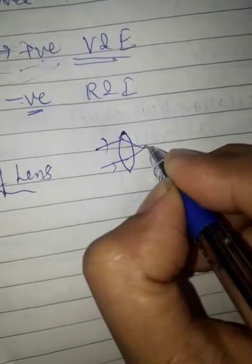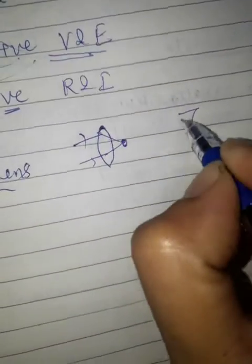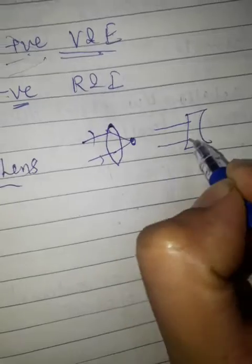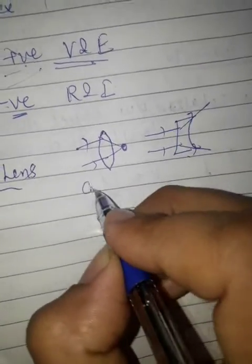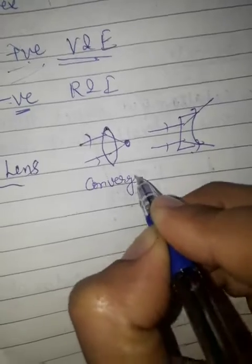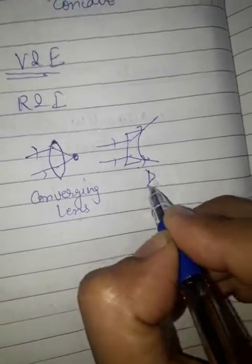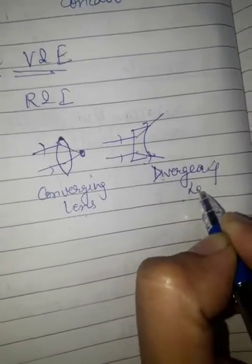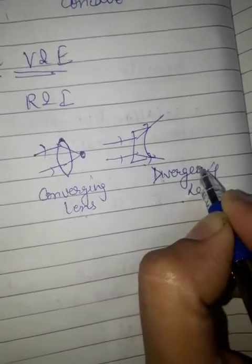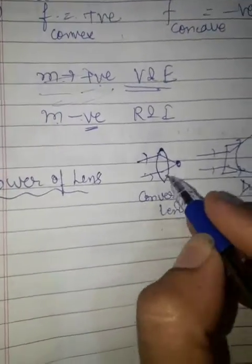A concave lens spreads light rays apart, so it is called a diverging lens. The power of a lens is its capability to converge or diverge light rays.